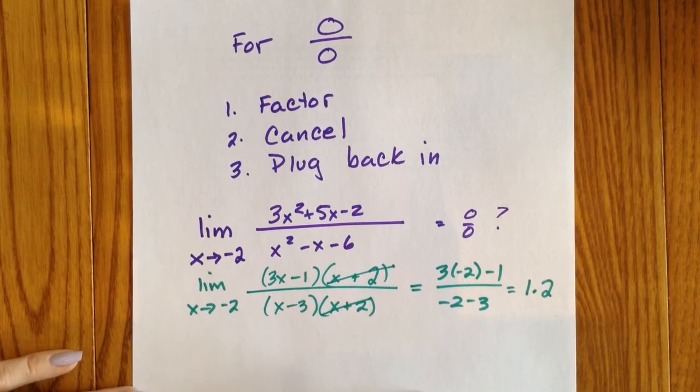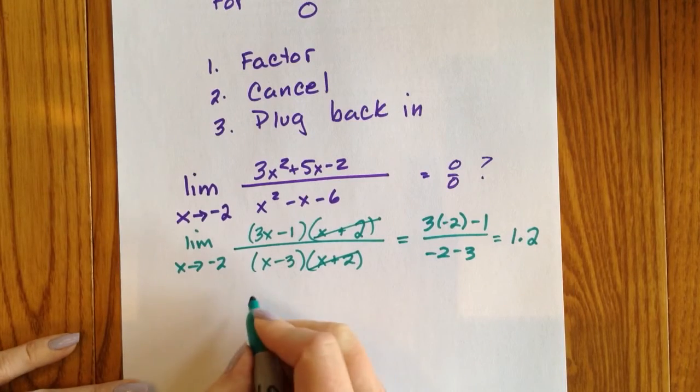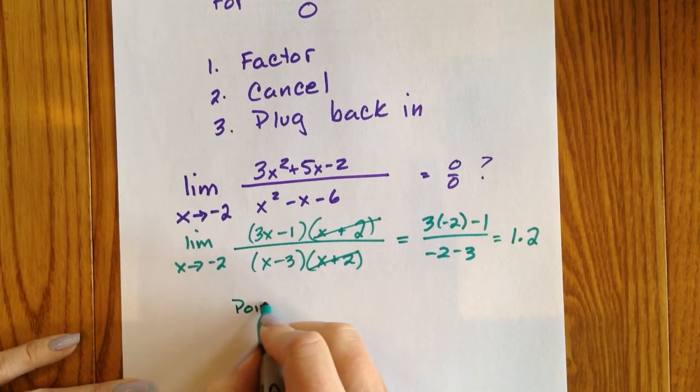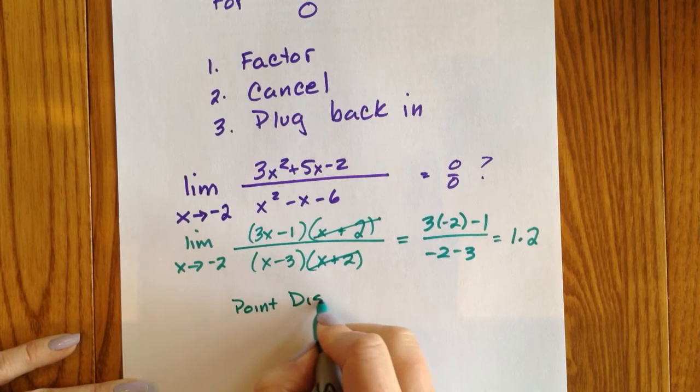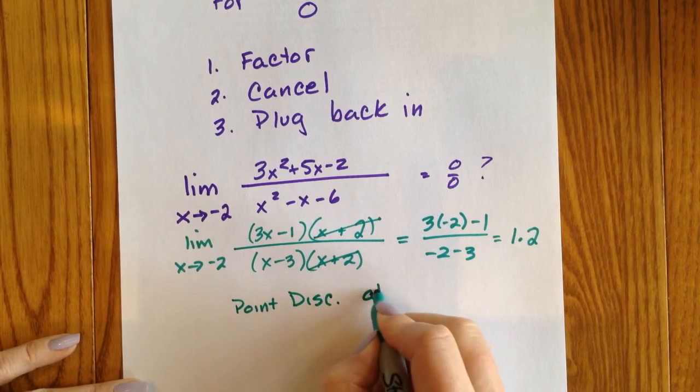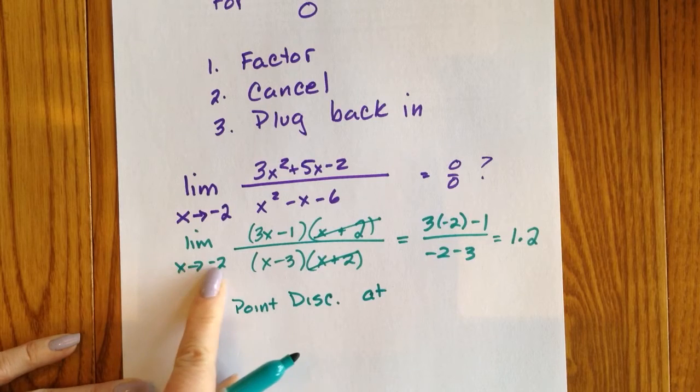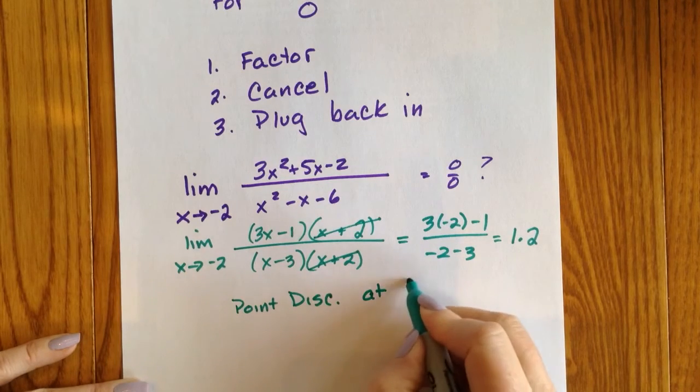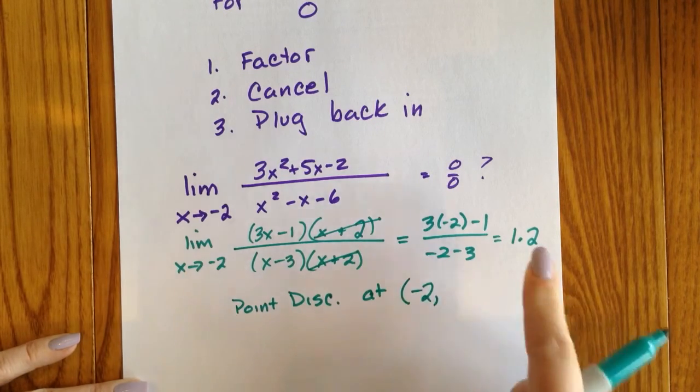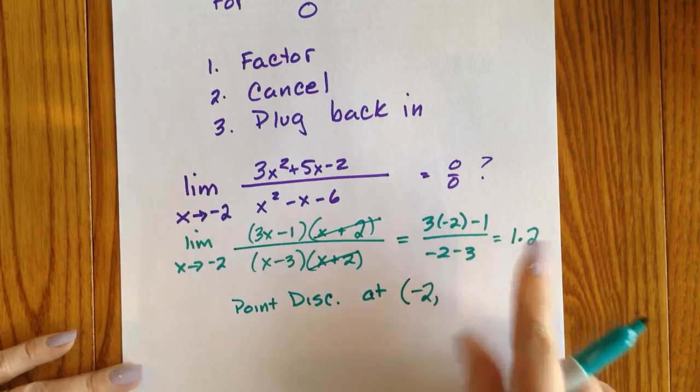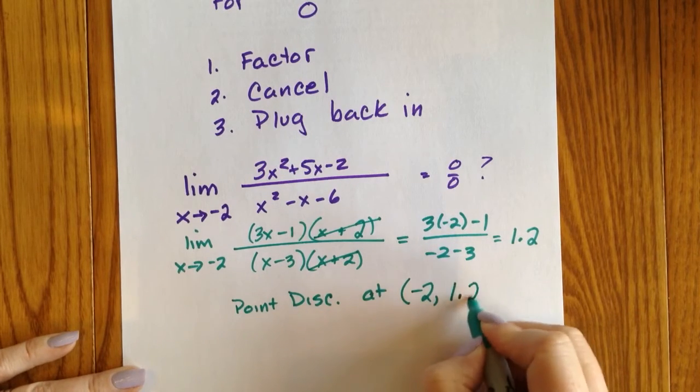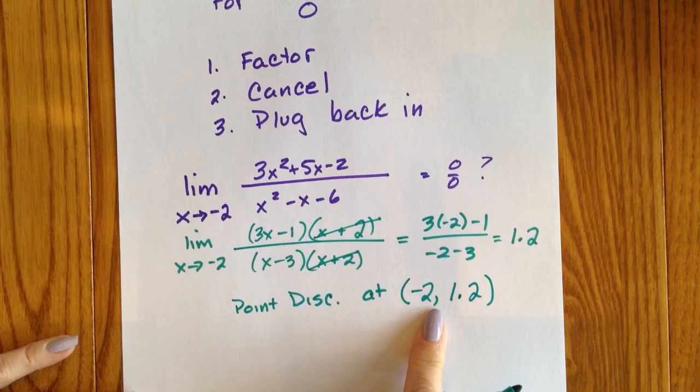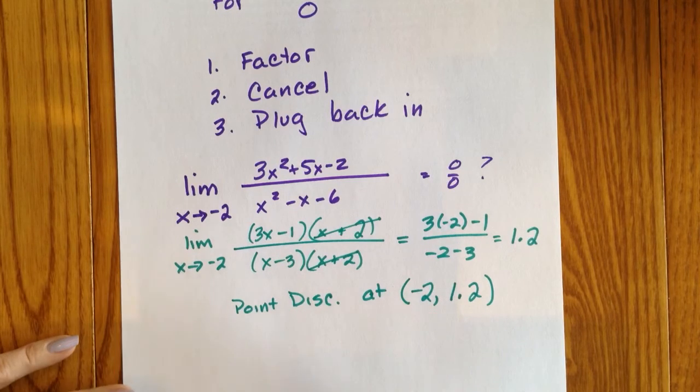So here's what this means. There will be a point discontinuity at negative two is what the x was approaching and the answers to limits are y coordinates. Ladies and gentlemen, there is a hole in the graph. There is a single point that has been removed.